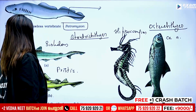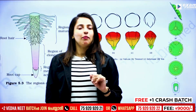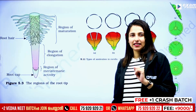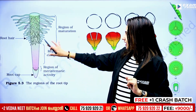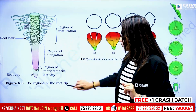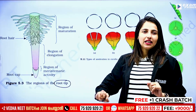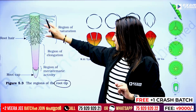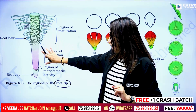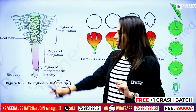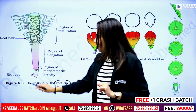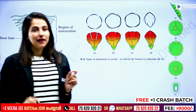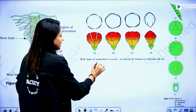We have to look at the morphology of flowering plants. In the root region: permanent region, maturation region, elongation, then the root cap. This is the important thing to look at.